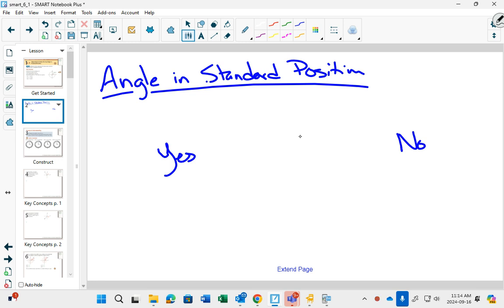The way that the game works is, on this side, we're going to say yes, on this side we're going to say no, and what I'm going to do is I'm going to draw an angle, and I'm going to label that angle, and we have to decide if that angle is in standard position or not.